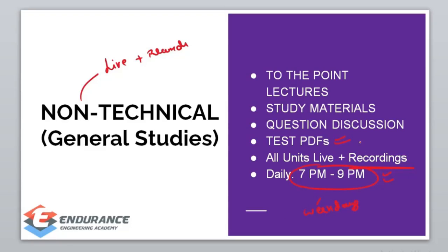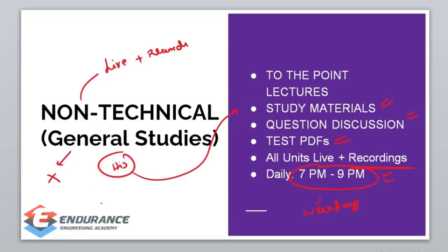There will be question discussion sessions, previous TNPCAE question papers in separate sessions, and study material. For example, History will have complete study material. General Studies will have no syllabus restriction — covering Units 1 to 10, General Science, and General Aptitude. We will cover General Studies completely, with to-the-point lectures on all main topics.